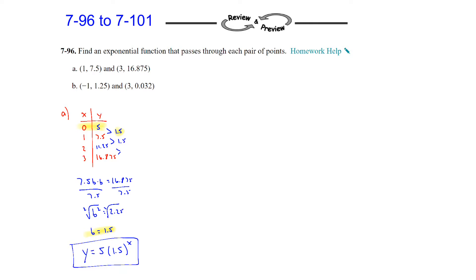Now let's look at part b, and we're going to do the same thing but using algebra to set up a system. Using the general form y = a·b^x, we plug in the values we know. The first equation is 1.25 = a·b^(−1), and the second equation is 0.032 = a·b^3.